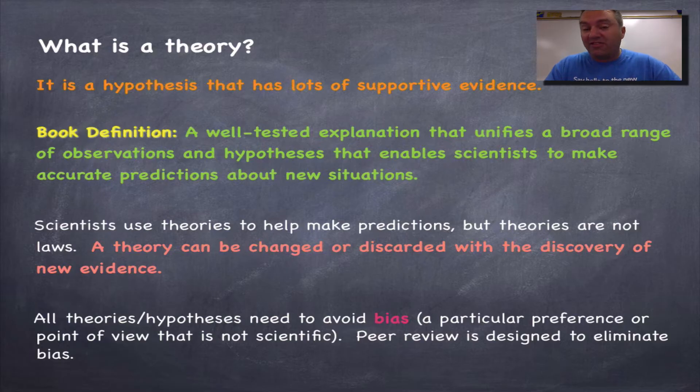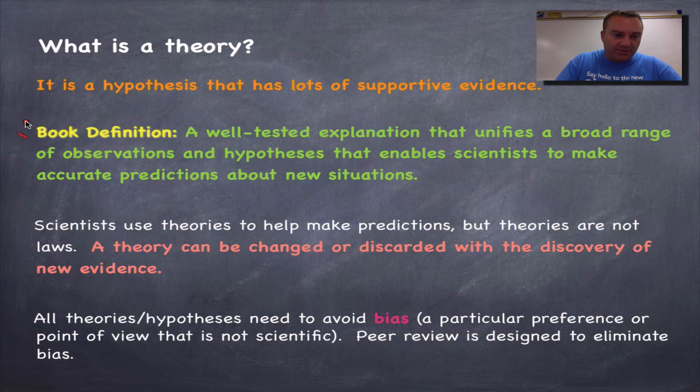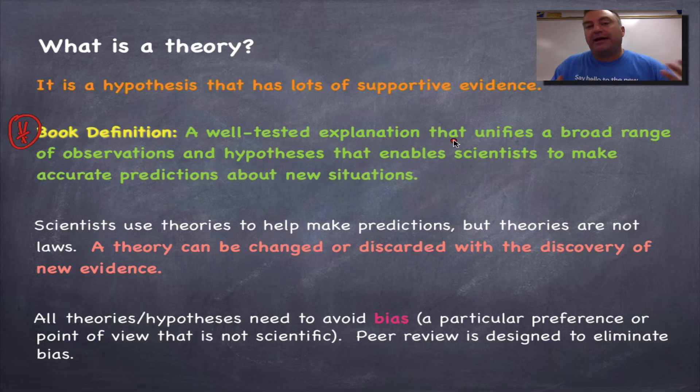Difference between a hypothesis and a theory. This one's very, very important. People in the public get this confused all the time. A hypothesis is simply a possible answer. A theory is a hypothesis with lots and lots of evidence. In other words, it's been experimented upon, experimented upon, experimented upon, and we've got a lot of evidence. So a theory is something very powerful. So make sure that you remember that hypothesis, possible answer that can be tested, theory, hypothesis with tons of evidence. But I do want you to make sure that you remember this book definition because this is what will probably show up on test. Well-tested explanation. In other words, hypothesis with a lot of evidence.